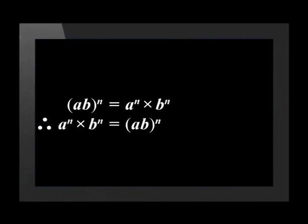So, a to the power of n times b to the power of n can be written as ab to the power of n. The two expressions are equivalent.